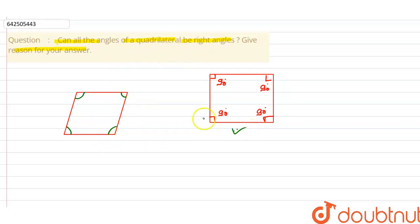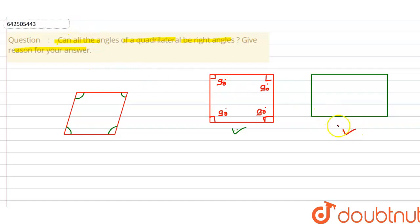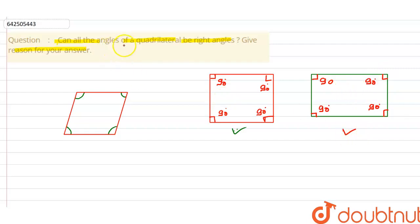This is true for a square. If we take a rectangle — here is our rectangle — the statement given in the question is also true for a rectangle. If we take the angle between any of the two sides in a rectangle, it is 90 degrees. This angle is also 90 degrees, this angle is also 90 degrees, and this angle is also 90 degrees. So in the case of a rectangle, all the angles of a quadrilateral are right angles.